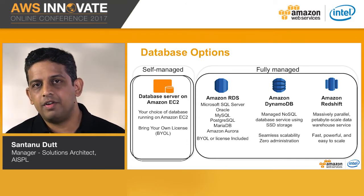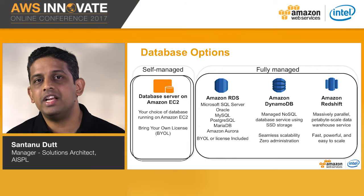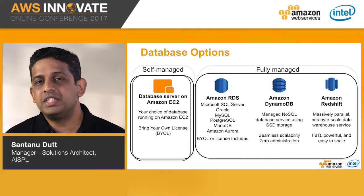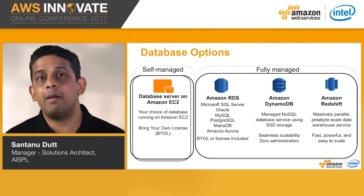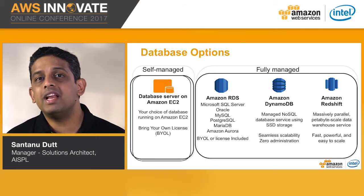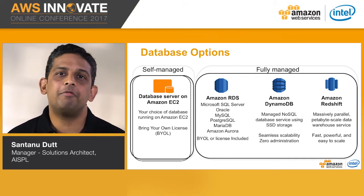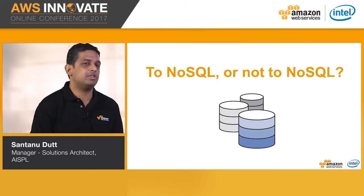If you want to go another route, we have Amazon Relational Database Service, or RDS, which gives you a managed relational database offering around several database options like MySQL, SQL Server, Oracle, and Amazon Aurora. We also have Amazon DynamoDB, a NoSQL database, and Amazon Redshift, which is a fast, fully managed data warehouse.